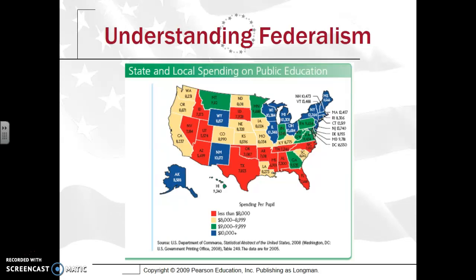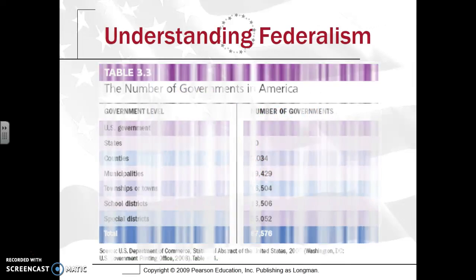As for state and local spending on public education, these numbers are from 2005, so they're a little outdated, but even when adjusted for inflation the wide gaps remain. Kansas might only spend $8,500 on education per student, whereas New Jersey is spending $13,740. Those very different spending amounts can certainly impact the level of service one receives, especially in education.